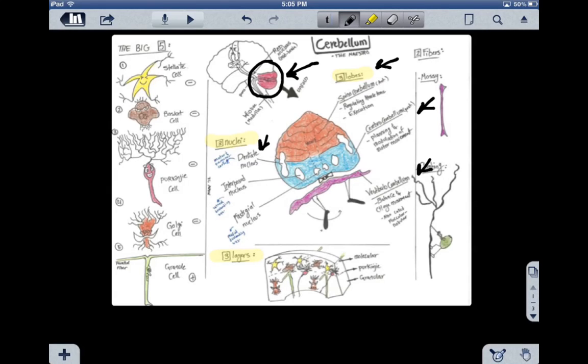The second nucleus is the interposed nucleus, which projects to the lateral descending system. The most medial, almost in the center below the vermis, which is the middle region of the cerebellum, is the fastigial nucleus, and it projects to the medial descending system.